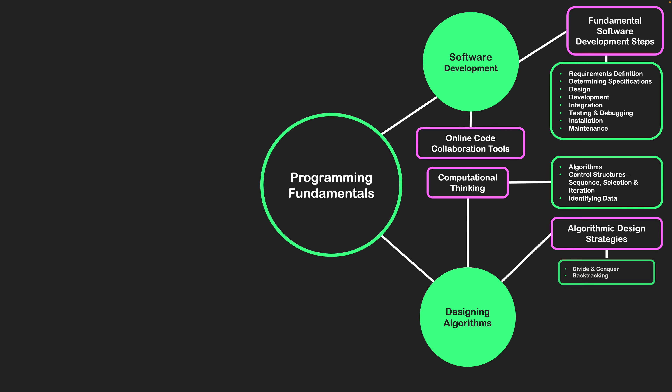The next step is algorithmic design strategies — ways we can approach developing algorithms. If we think about a program, it's not just one algorithm that will solve the entire program. Usually we're using multiple algorithms to create larger-scale programs that do many things.